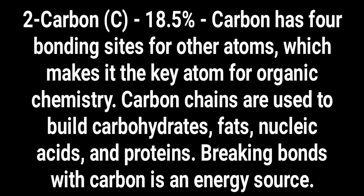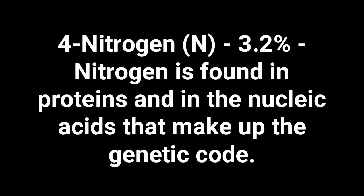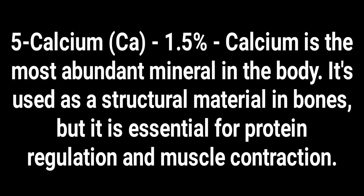Number three: hydrogen — 9.5 percent of the human body. Hydrogen is found in water and in all organic molecules. Number four: nitrogen — 3.2 percent of the human body. Nitrogen is found in proteins and in nucleic acids that make up the genetic code.